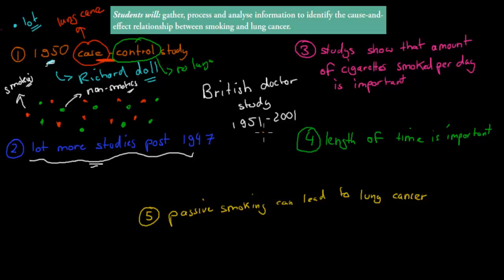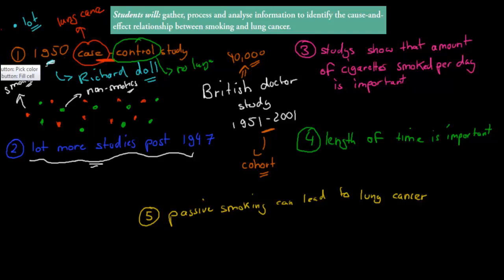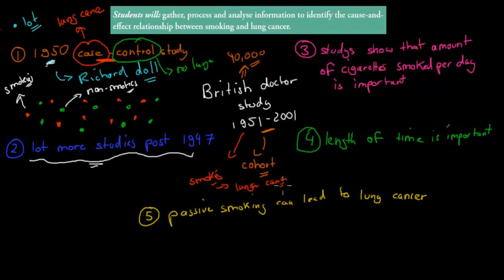The British Doctor Study ran from 1951 to 2001 — over 50 years — making it a cohort study, not a case control study. It followed around 40,000 doctors all over Britain over 50 years to find out if there was a cause and effect relationship between smoking and lung cancer. Within the first five years, they already found a definitive link between smoking and lung cancer, showing clearly that the more you smoked, the greater the chance of getting lung cancer.